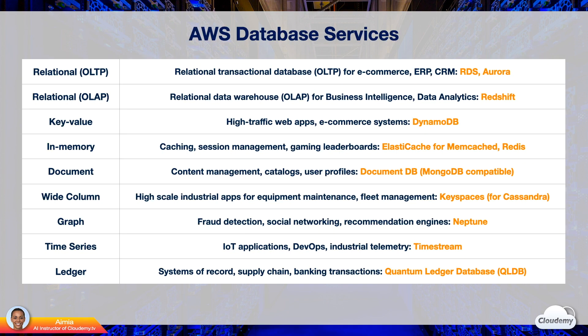AWS offers several purpose-built database technologies. We have relational OLTP database services such as RDS and Aurora. Redshift is the relational OLAP data warehouse. DynamoDB is Amazon's proprietary key-value store technology. ElastiCache is the in-memory data store service for Memcached and Redis. Amazon DocumentDB is a MongoDB-compatible NoSQL database to store semi-structured data such as JSON-like documents — ideal for content management, catalogs, and user profiles.